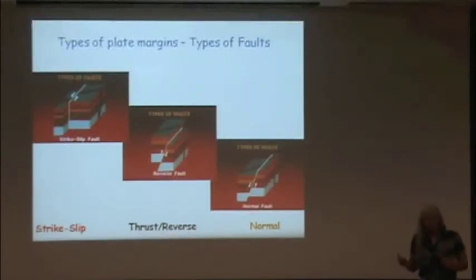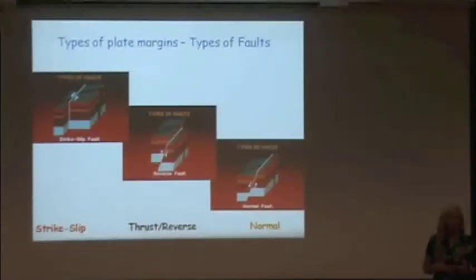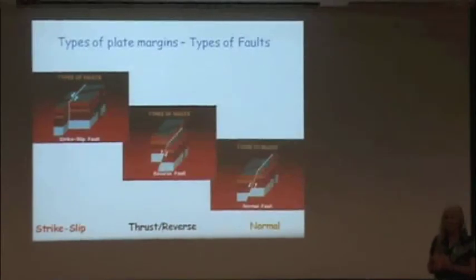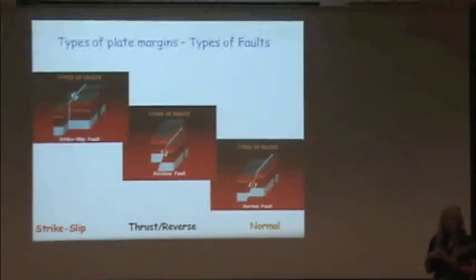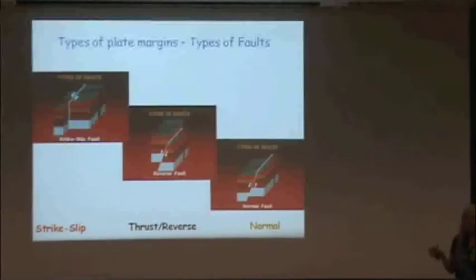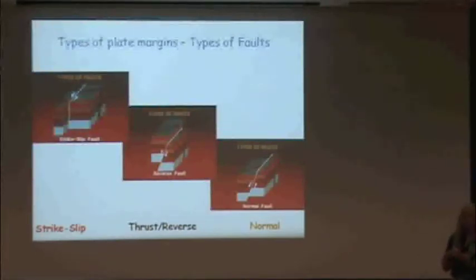Reverse faults are the ones that make the biggest earthquakes. All of our magnitude-9-line earthquakes have happened on reverse or thrust faults. The Great Chile earthquake of 1960 was the biggest ever measured at magnitude 9.5. The other biggest were the 1964 Alaska earthquake at magnitude 9.2, the Sumatra earthquake in 2004 also at magnitude 9.2, and the Tohoku earthquake, which happened last March, at magnitude 9.0. Those were all thrust faults at convergent boundaries.